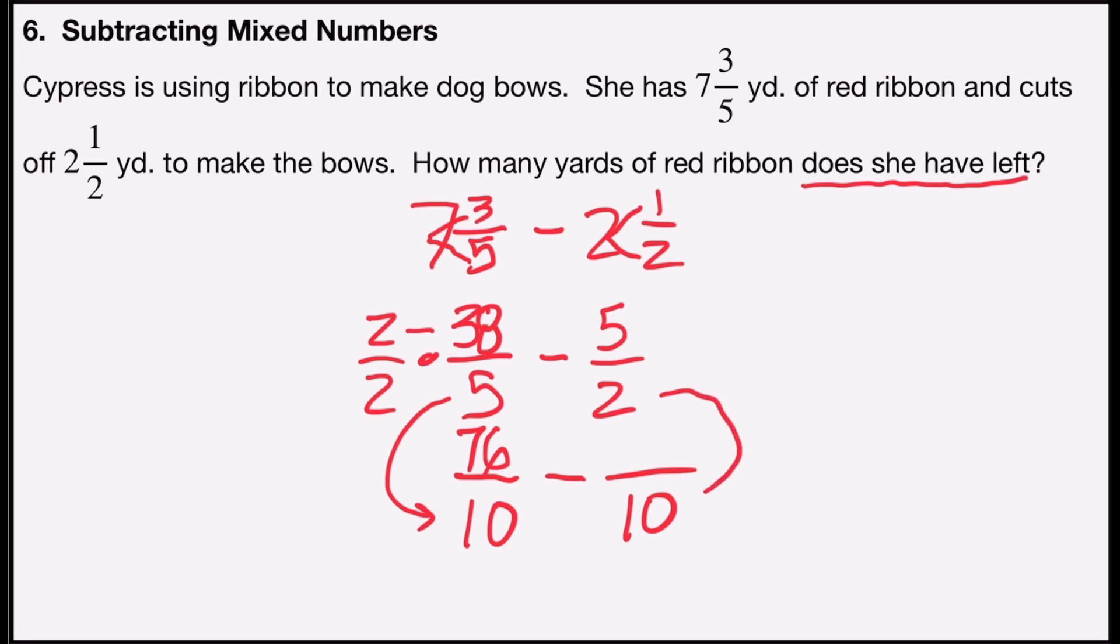For the second fraction, two times what number is ten? That was five. So I'm going to multiply by the form of one, five over five. And five times five is twenty-five. So five over two is the same thing as twenty-five over ten.